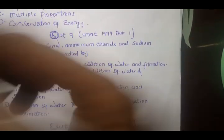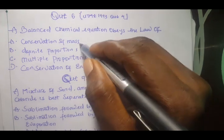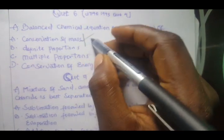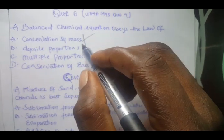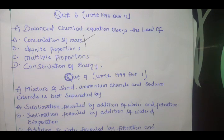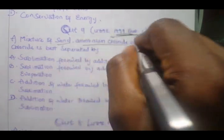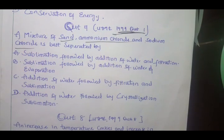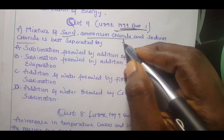Question 6 is talking about what we all know in chemistry, saying a balanced chemical equation obeys the law of conservation of mass. Please note, not all chemical equations must be balanced, it's according to the law of conservation of mass, which says that matter can never be created nor destroyed, but can be transformed from one form to another. Question 7, we have a mixture from 1994 question 1: a mixture of sand, ammonium chloride, and sodium chloride is best separated by...